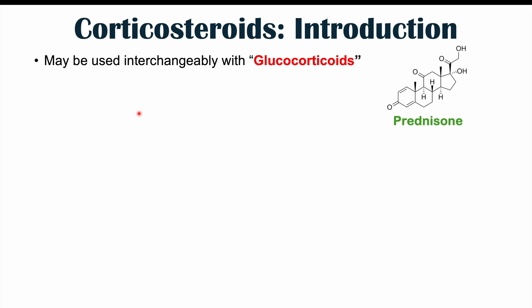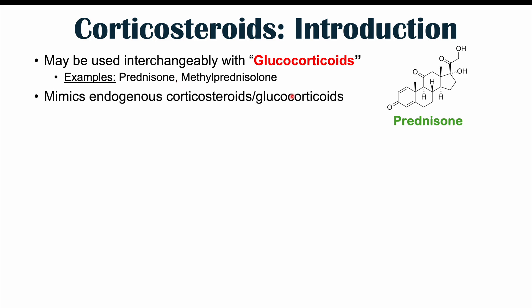Before we talk about those health consequences, let's discuss how corticosteroids work and what conditions they treat. Some examples of corticosteroids include prednisolone and methylprednisolone, and they mimic endogenous corticosteroids or glucocorticoids. Our body actually produces its own glucocorticoids that act at certain times to relieve inflammation. The ones we prescribe patients — more specifically systemic corticosteroids — are utilized to act like endogenous steroids, but taken at higher doses and levels than what our body would generally produce.